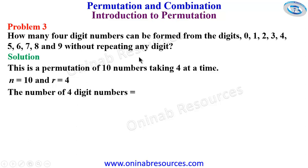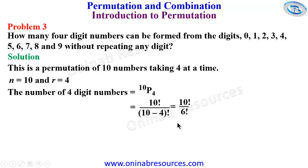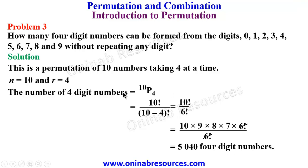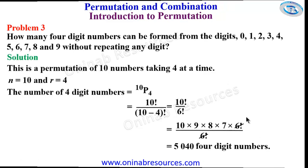The number of four-digit numbers will be 10P4 = 10! / (10 - 4)! = 10! / 6! = (10 × 9 × 8 × 7 × 6!) / 6!. The 6! cancels, leaving 10 × 9 × 8 × 7 = 5040 four-digit numbers. That's the end of the solution to problem three.